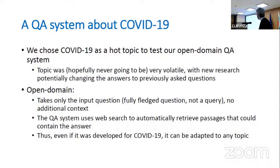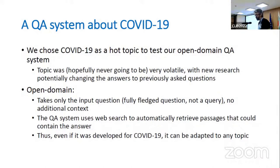We call it open domain because it only needs the input question from the user — it's a question, not a query — so it has to provide the predicate and the arguments. We are using NLP tools to parse that question into predicate and argument. It will highlight a possible answer using a web search engine. The pipeline is language independent and topic independent. Provided that you have the right corpora and the right question-and-answer dataset, you can train the pipeline from scratch to answer questions in a new domain or topic.